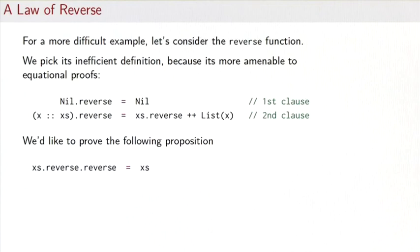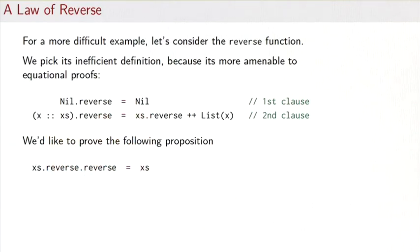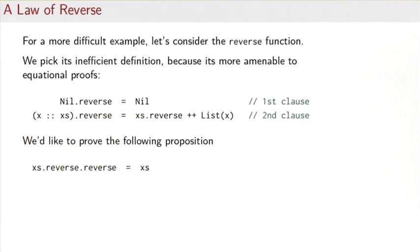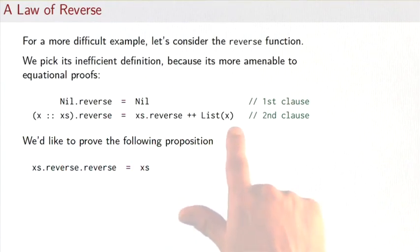For a more difficult example, let's consider the reverse function. We pick its inefficient definition here because it's more amenable to equational proofs. As defining clauses we have: nil.reverse is nil, and (x followed by xs).reverse is the reversal of the list xs followed by the element x.